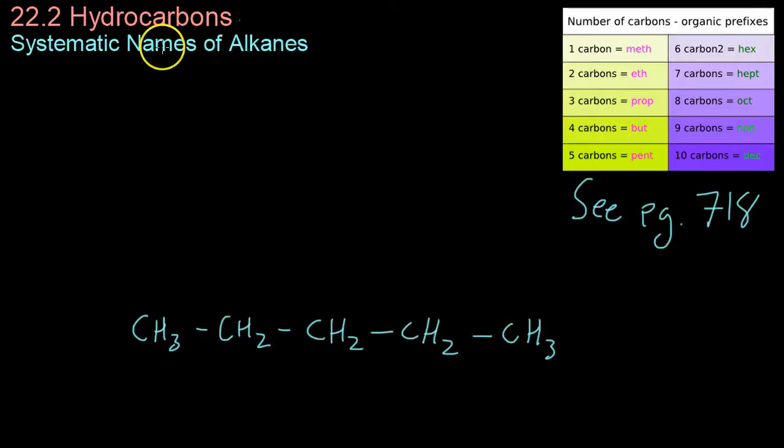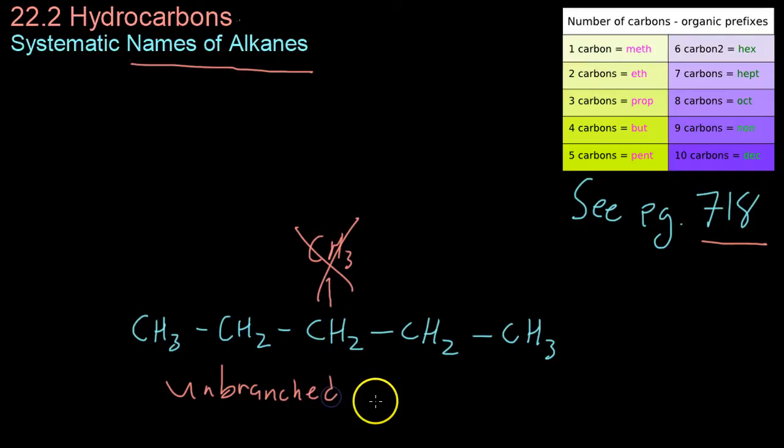Moving on now, we're going to be getting into the tricky business of naming alkanes. And the first thing you have to do is go to page 718 in your book, especially if you can't read this chart up here, which basically lists the carbon atom chain prefixes going from meth all the way to dec. And we're not going to be looking at anything with more than 10 carbons. So, don't worry about that. Now, naming hydrocarbons, alkanes that don't have branches, in other words, are just a straight line.